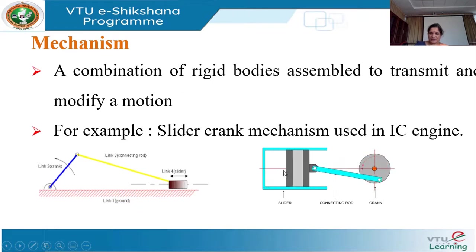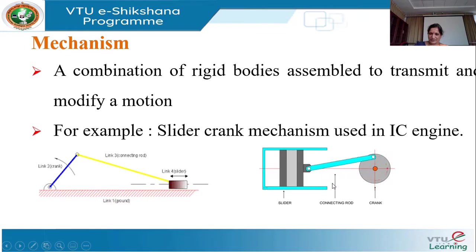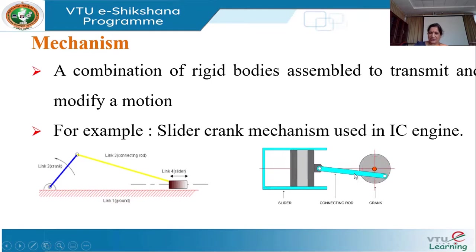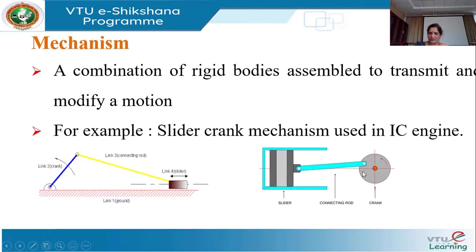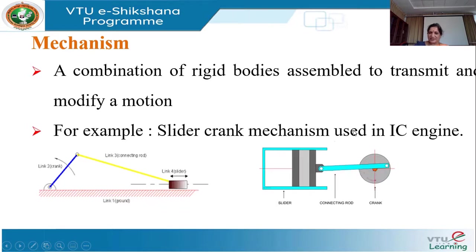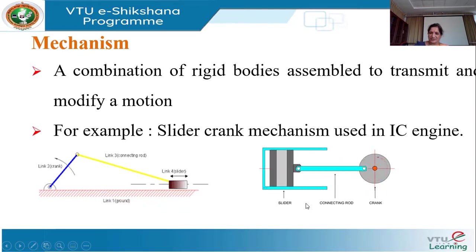The slider moves from top dead center to bottom dead center — it reciprocates. It transmits motion from top dead center to bottom dead center and converts the reciprocating motion of the piston into a rotary motion of the crank. It converts, transmits, and modifies the motion — that is the function of the mechanism.